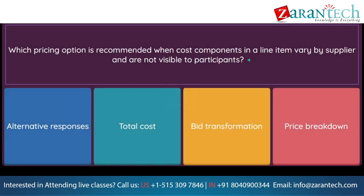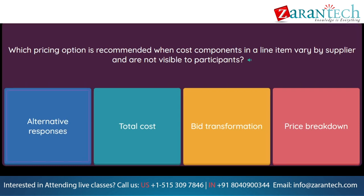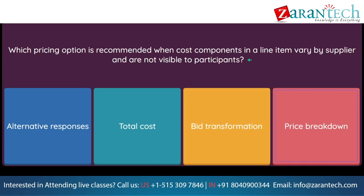Question: Which pricing option is recommended when cost components in a line item vary by supplier and are not visible to participants? Option 1: alternative responses. Option 2: total cost. Option 3: bid transformation. Option 4: price breakdown.